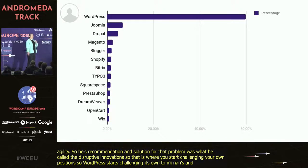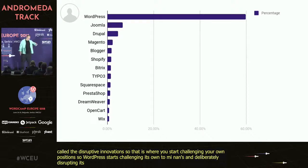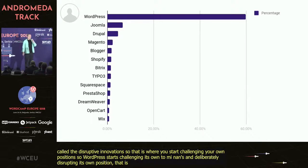That's exactly what the REST API does — it starts challenging WordPress's own dominance and deliberately disrupting its own position. And indeed, it's exactly what Gutenberg does as well.